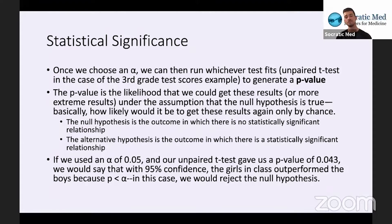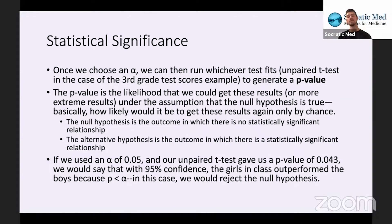So if the girls took the test again, we would say with 95% confidence they would score higher than the boys again — that's the alternative hypothesis. If we use an alpha of 0.05 and our unpaired t-test gives a value of 0.043, that's a good thing because our value is smaller than alpha. We would say that with 95% confidence, the girls outperform the boys, because P is less than alpha. In this case, we reject the null hypothesis, proving a statistically significant relationship.